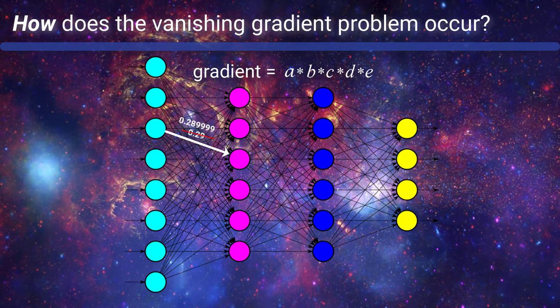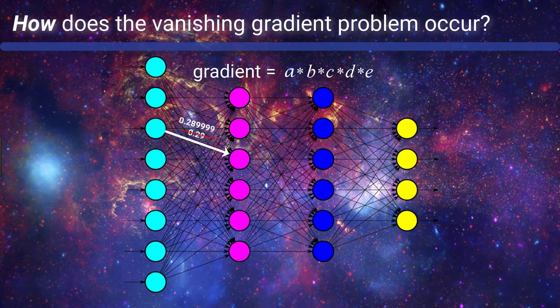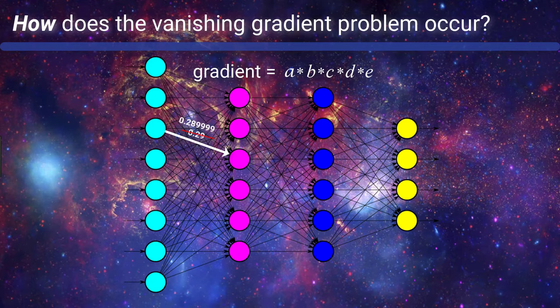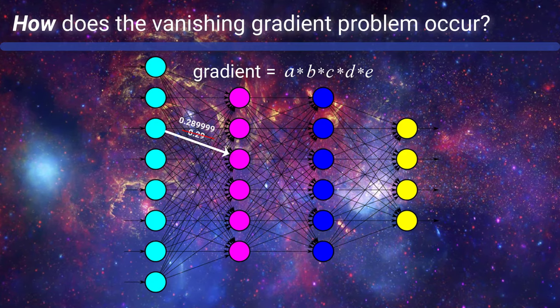And we can see why earlier weights are subject to this problem. Because as we said, the earlier in the network the weight resides, the more terms are going to be included in the product to calculate the gradient. And the more terms we're multiplying together that are less than 1, the quicker the gradient is going to vanish.